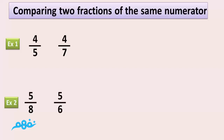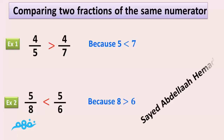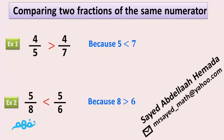Example 1: 4 over 5 is greater than 4 over 7 because 5 is less than 7. Example 2: 5 over 8 is less than 5 over 6 because 8 is greater than 6. And now we are reaching the end of our lesson. Thank you and goodbye.